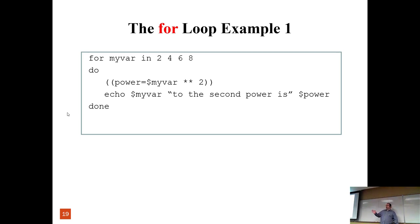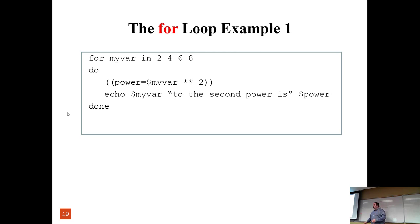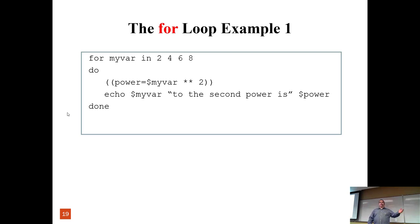For example, 'for myvar in 2 4 6 8' — this is similar to what other languages call 'for each'. For each element in a list, do the following thing. You could feed a list of files instead of a series of numbers. In this example it squares each value: two squared, four squared, and so on.